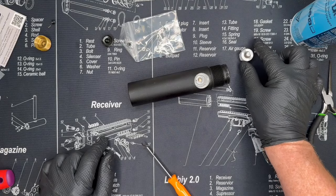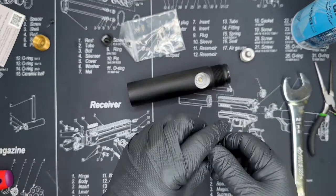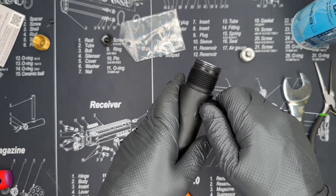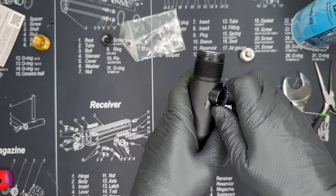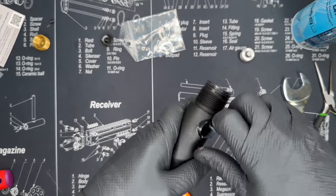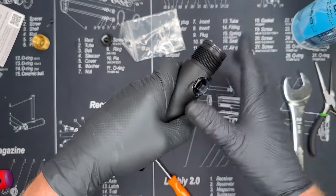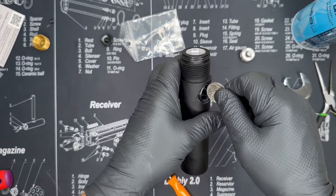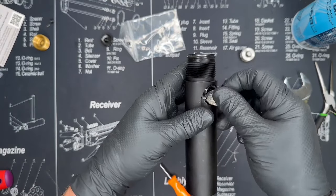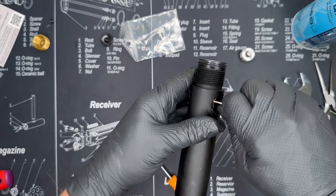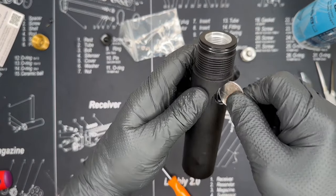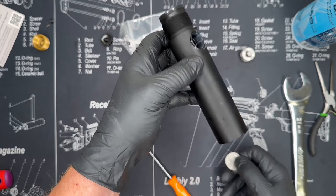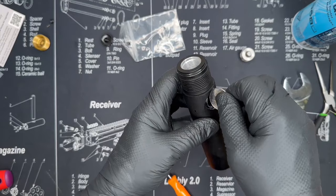Now we're going to take our high pressure cup and at this point you're going to need a quarter. We're going to thread it in. When we get to the end here, we're going to use our quarter, find our two holes, and just tighten it nice and tight down. It should be flush and nice and tight. We don't need to really use any tools or anything like that to get it tight.